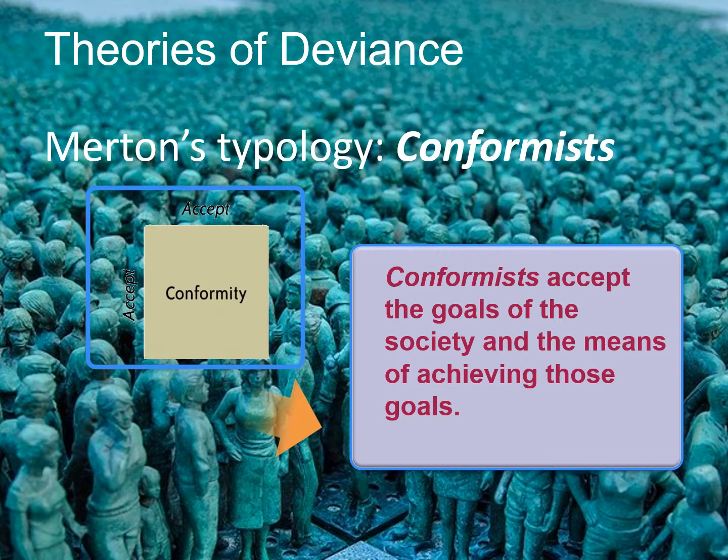The first in Merton's typology is conformist. Conformists accept the goals of the society and the means of achieving those goals. These are the people who work hard in school, go to college, get a job, and save money because they want to buy a new house, have a fancy car, wear nice clothes, and contribute to their retirement plans.